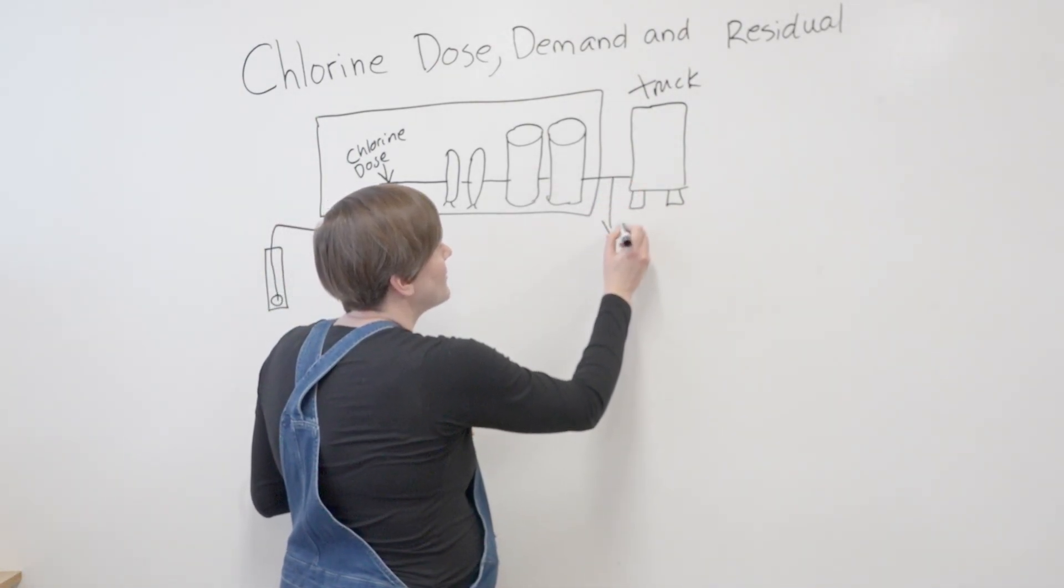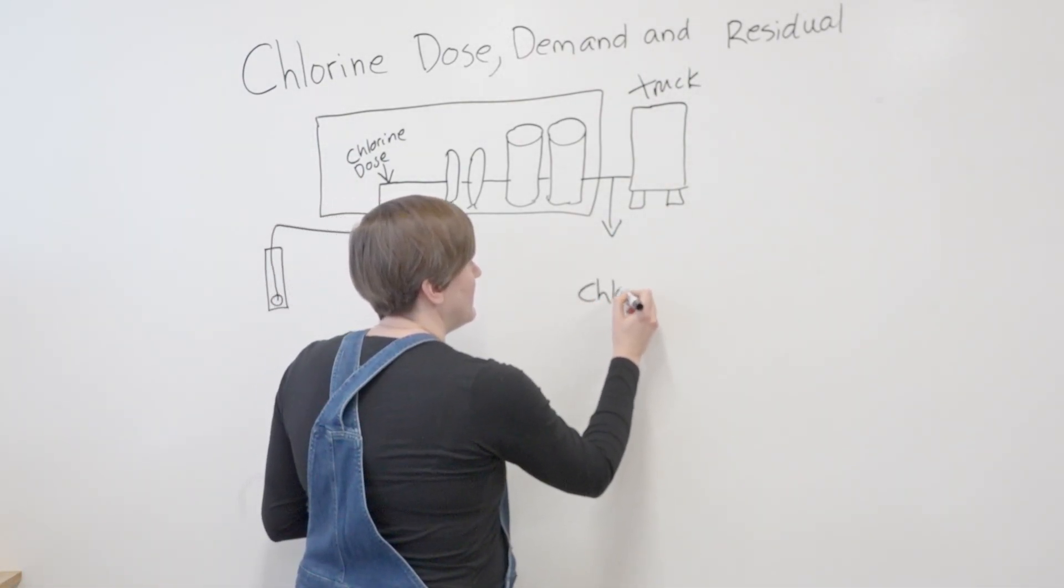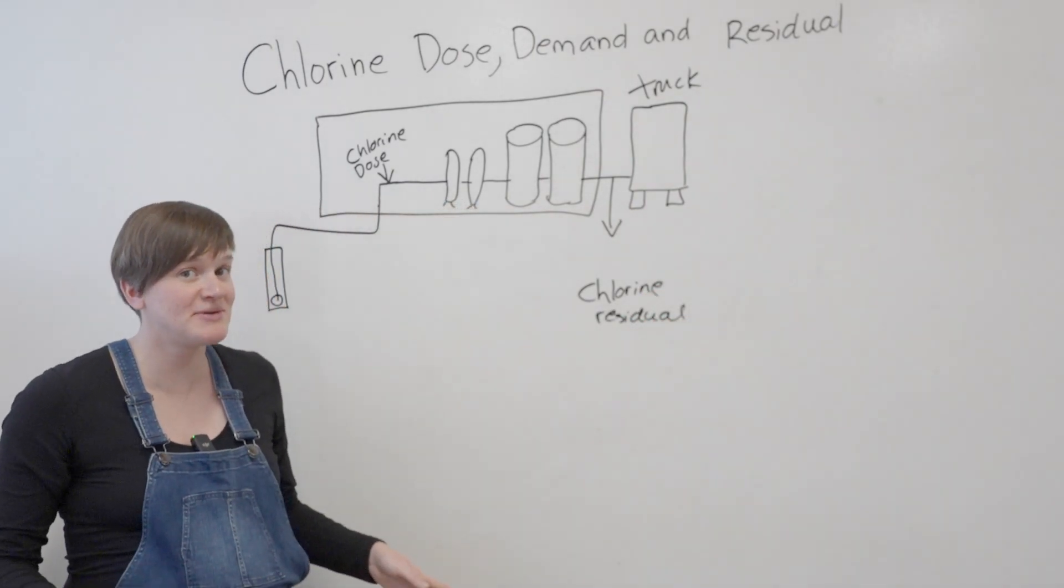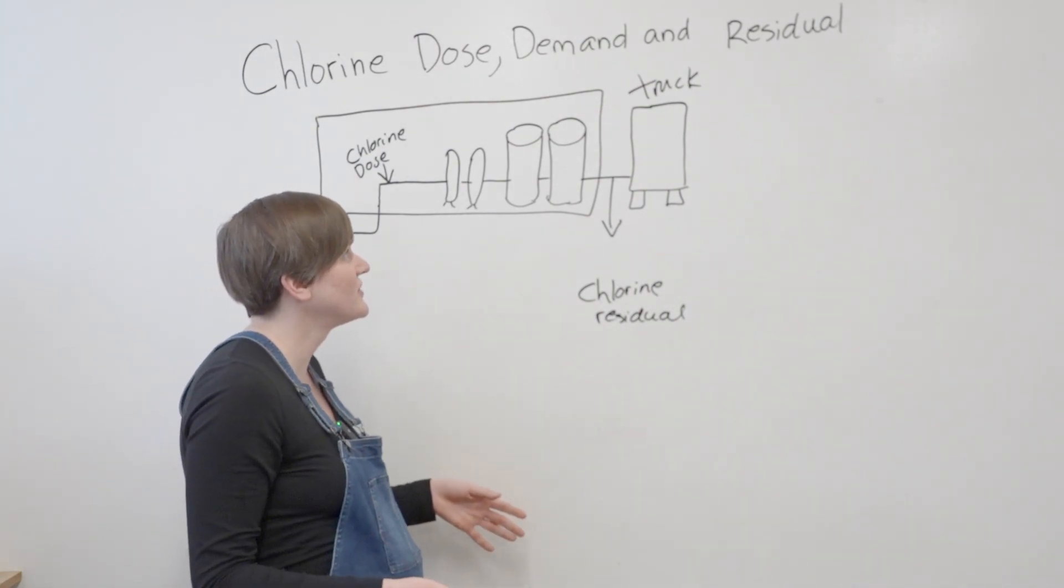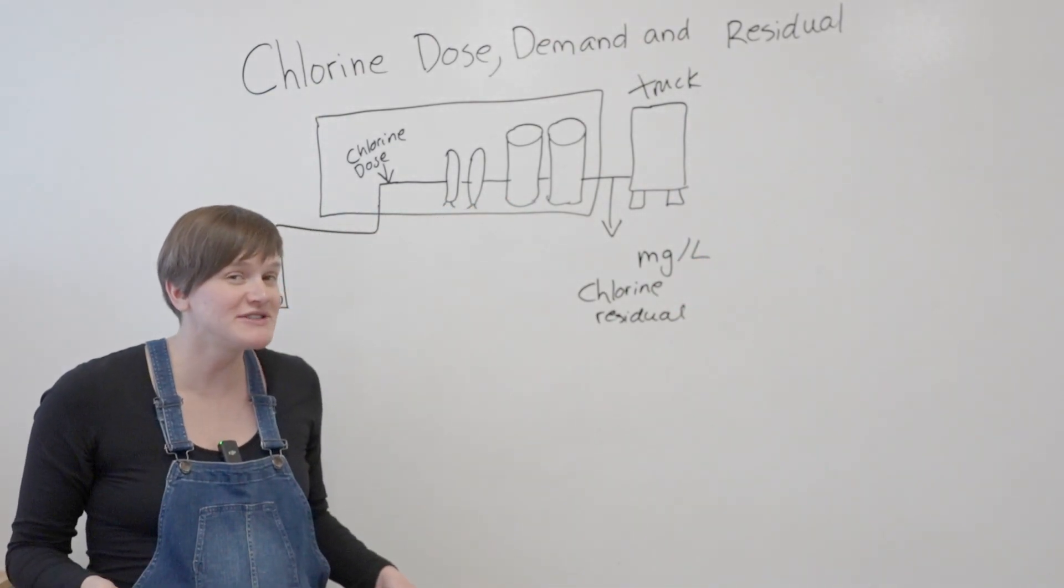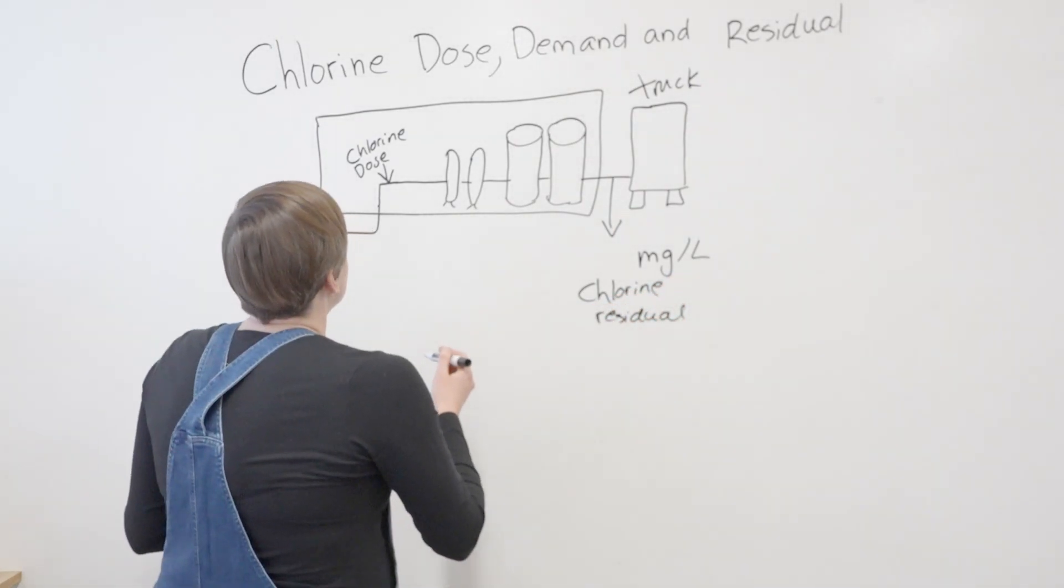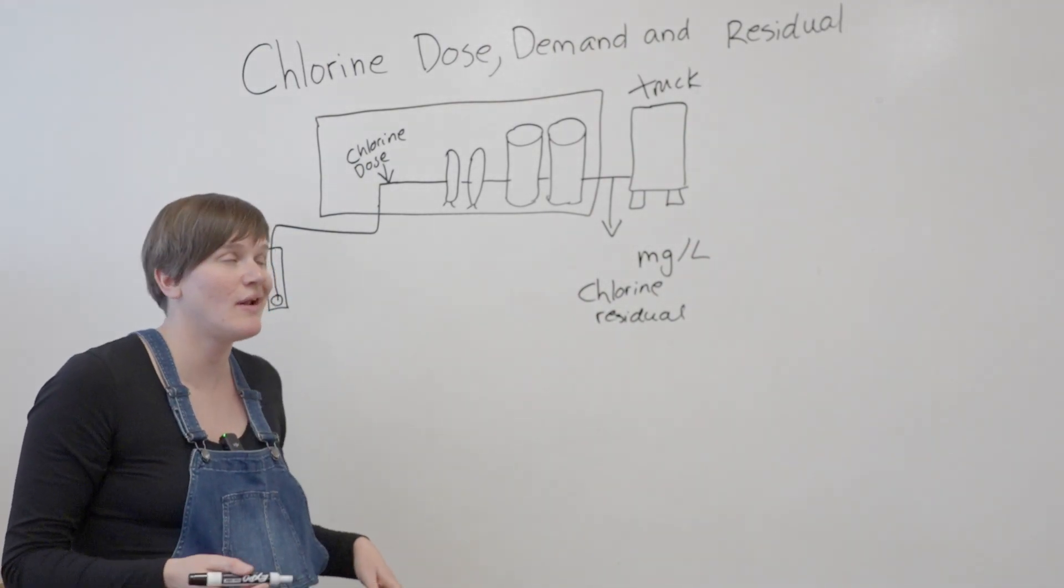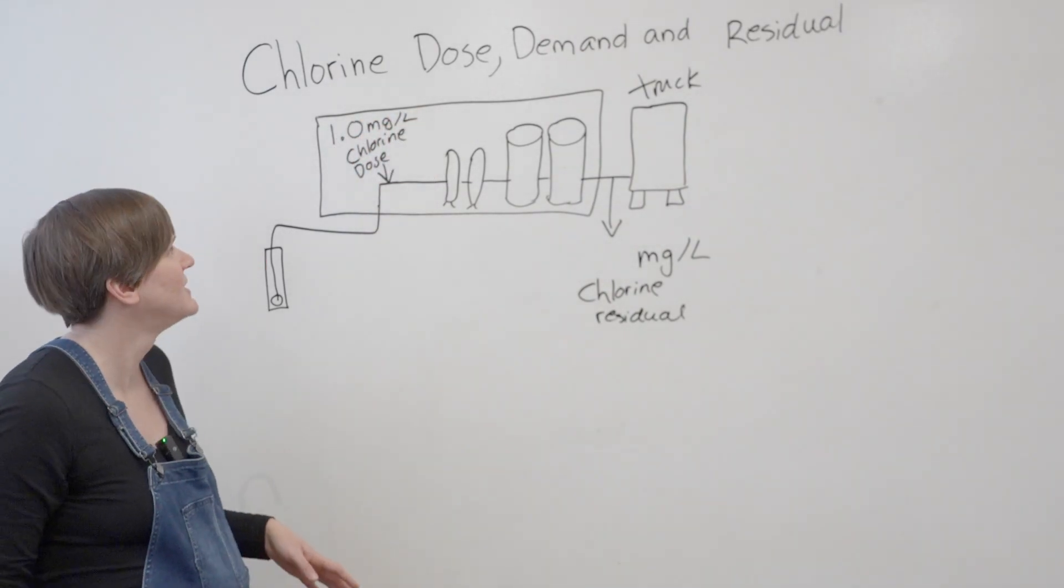If you were to take a chlorine residual test at this point, you would get a reading. This would be typical whether you're filling bulk water delivery trucks or if it's going into a distribution system - operators are taking chlorine residual tests all the time. The units would be milligrams per liter, or parts per million (PPM), which is equivalent to milligrams per liter. So let's just say the chlorine dosing pumps are dosing at a rate of 1.0 milligrams per liter, or PPM - same thing.